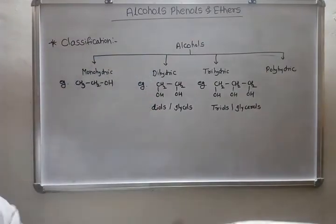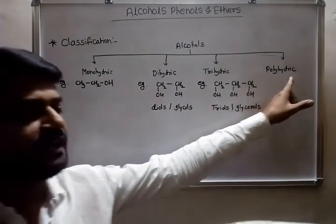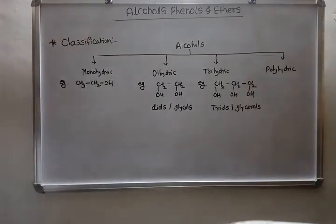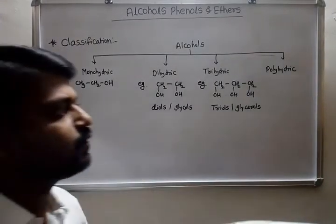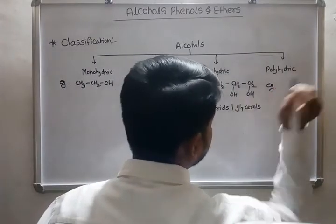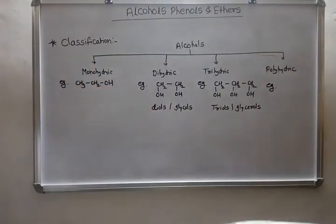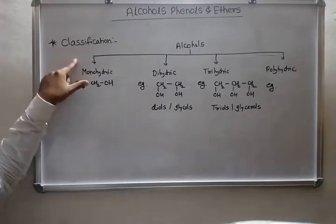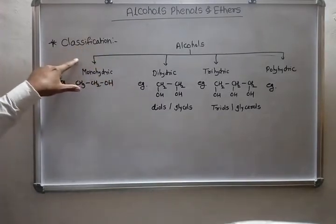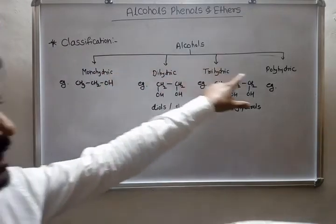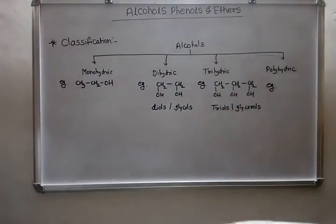For example, there are six carbon chains and these six carbons are each attached to a hydroxyl group. This is named hexahydric alcohol. So on the basis of the number of hydroxyl groups present in a molecule, alcohols are classified as monohydric, dihydric, trihydric and polyhydric alcohols.